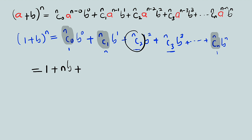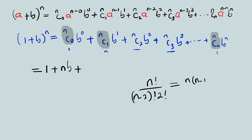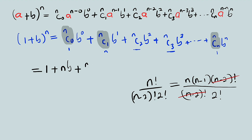Plus — what is nC2? Let me work it out. nC2 is n factorial divided by (n minus 2) factorial times 2 factorial. If you break this down you have n times (n minus 1) times (n minus 2) factorial divided by (n minus 2) factorial times 2 factorial. The (n minus 2) factorials cancel, so all we have is n multiplied by (n minus 1) divided by 2 factorial, then multiplied by b to the power of 2.